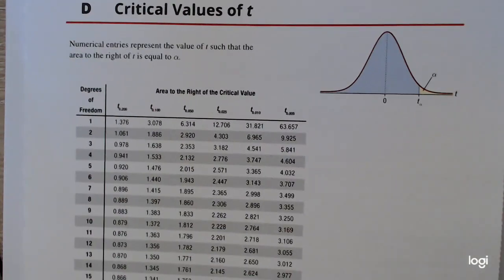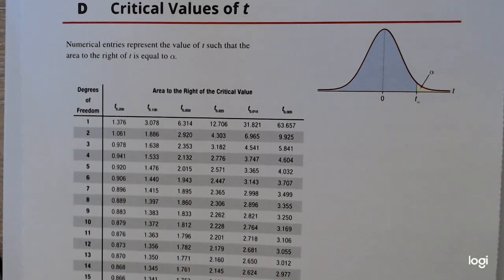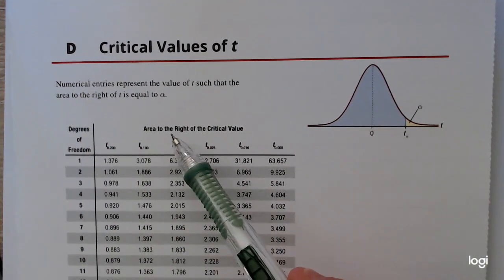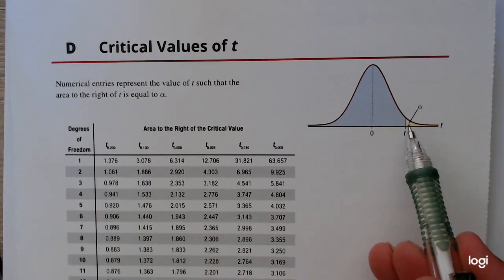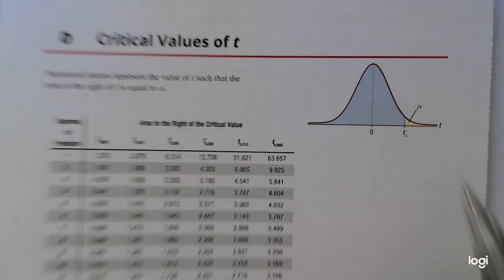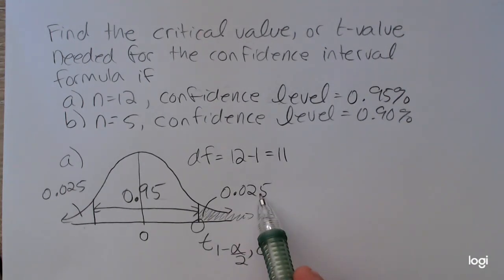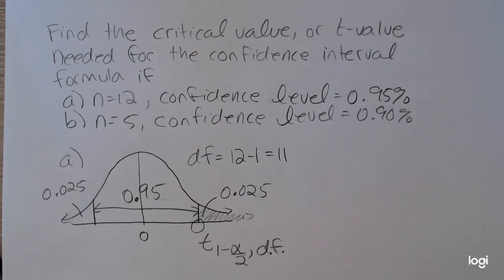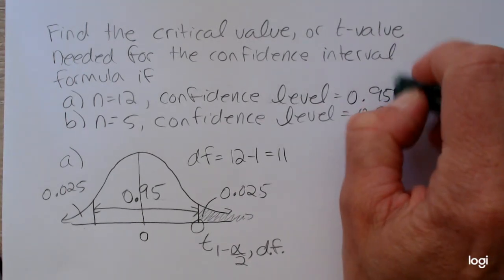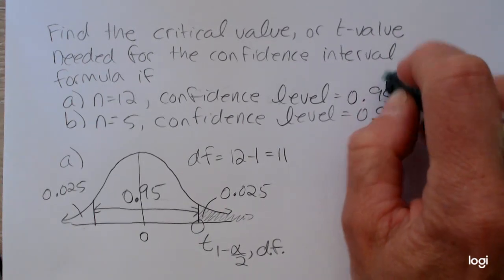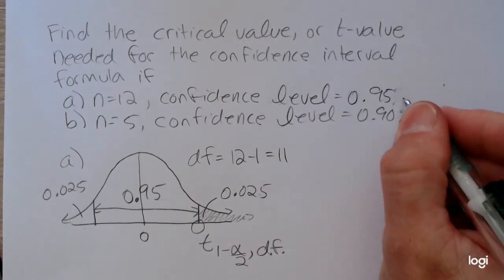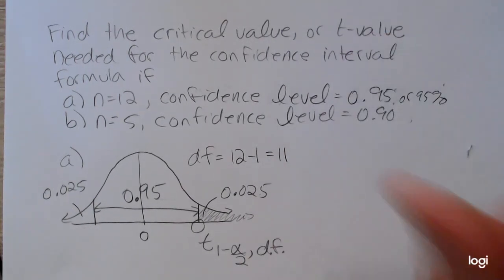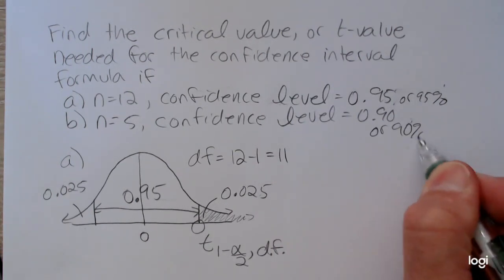So if you look at this table, and I know it's a little hard to read. They print this very, very small. Area to the right of the critical value. So sketching it helps you figure out how much area is to the right. So if our level of confidence is 0.95, or 95%. So I know how much area I want to the right of this critical value.